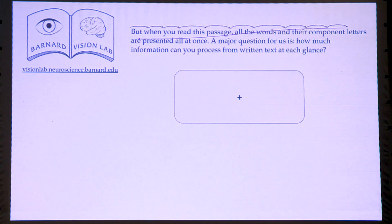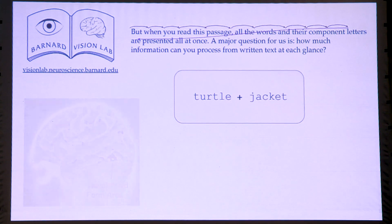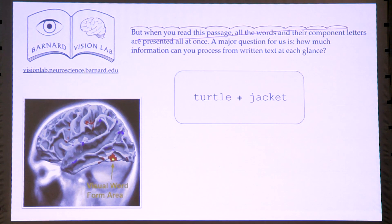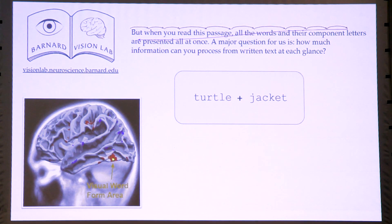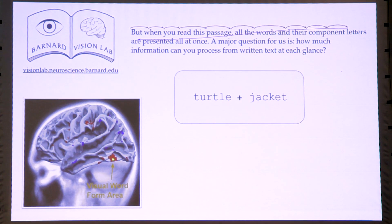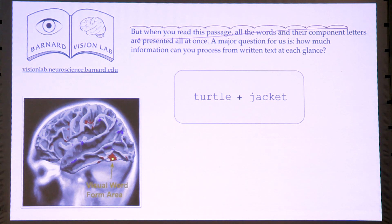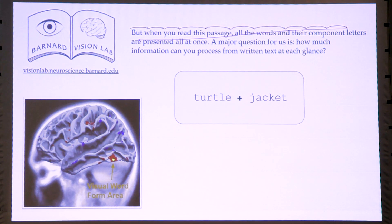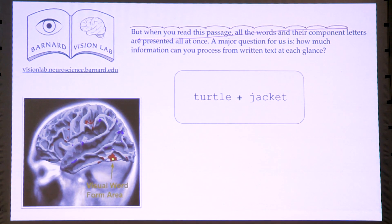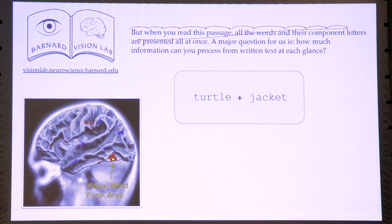We also do functional magnetic resonance imaging studies where we put people in an MRI scanner while they read. And we're particularly interested in this one little bit of brain called the visual word form area in the left ventral temporal cortex that becomes specialized for reading as a child learns to read.